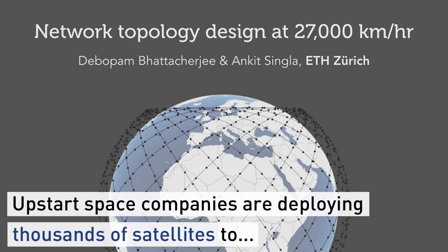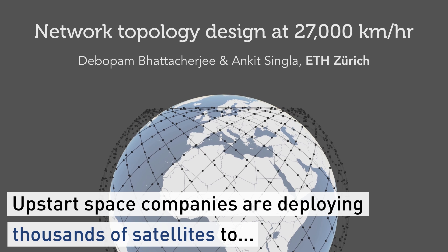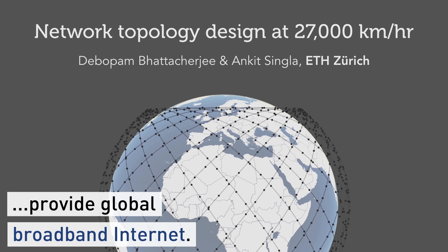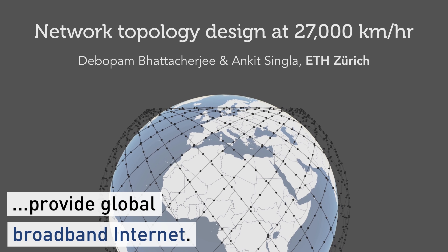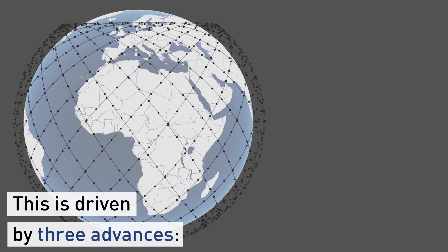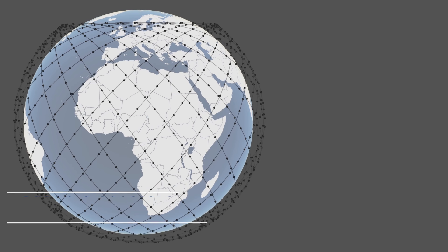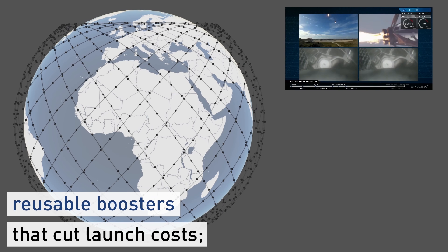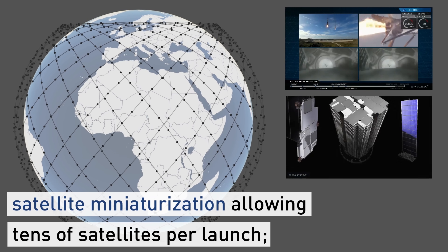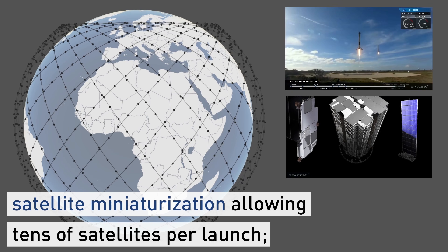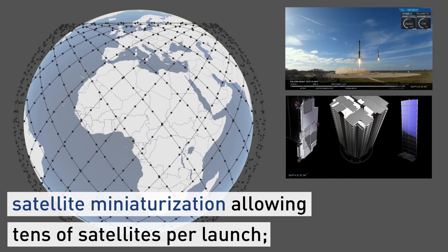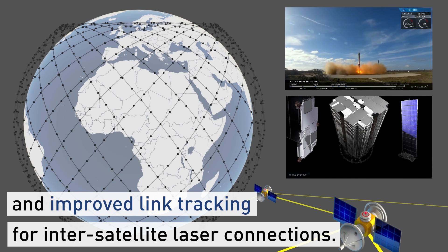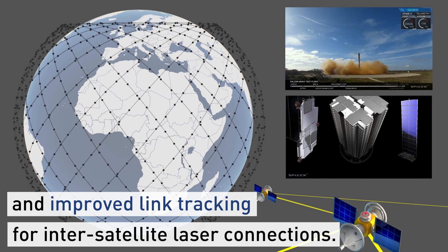Upstart space companies are deploying thousands of satellites to provide global broadband internet. This is driven by three advances: reusable boosters that cut launch costs, satellite miniaturization allowing tens of satellites per launch, and improved link tracking for inter-satellite laser connections.